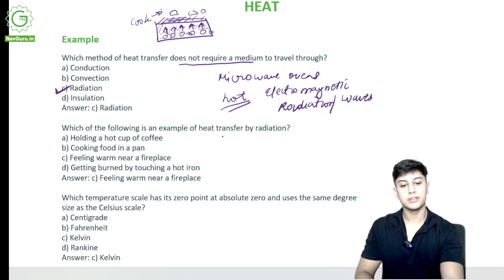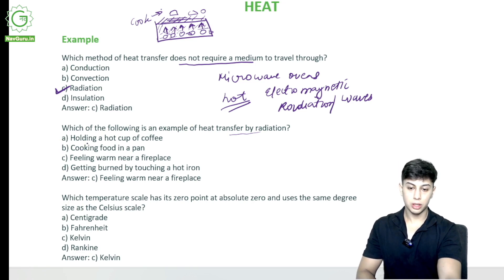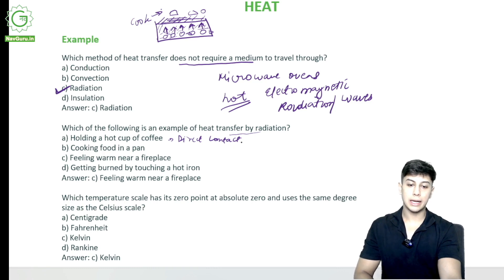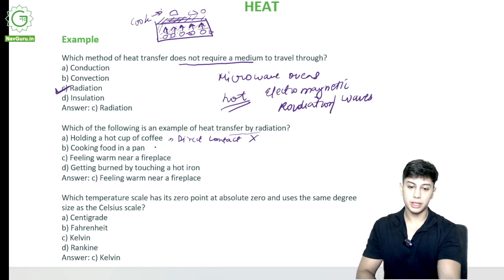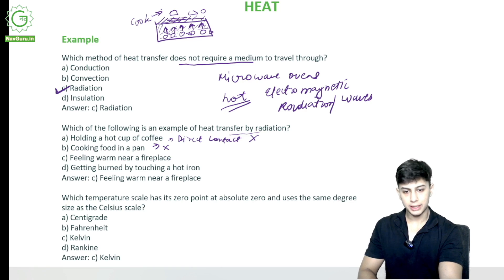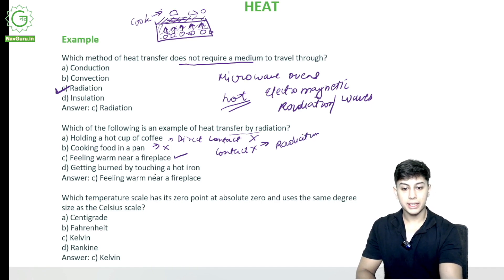Which of the following is an example of heat transfer by radiation? Holding a hot cup of coffee involves direct contact — no. Cooking food in a pan is also direct contact — no. Feeling warm near a fireplace — yes, because we are not in contact; the radiation from the fire is enough. Getting burnt by touching a hot iron involves contact — no. So feeling warm near a fireplace is the answer.